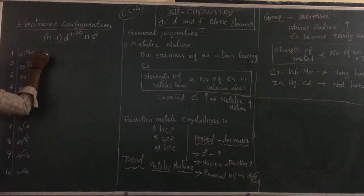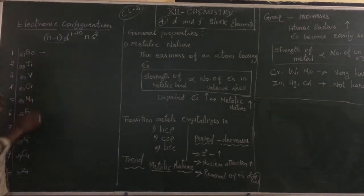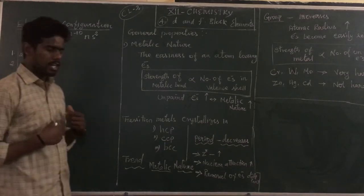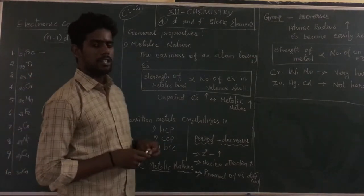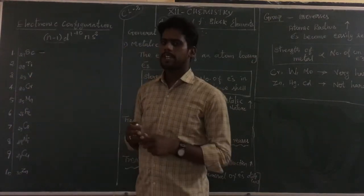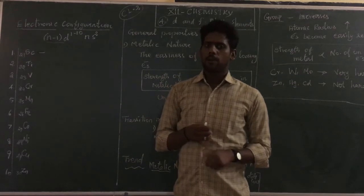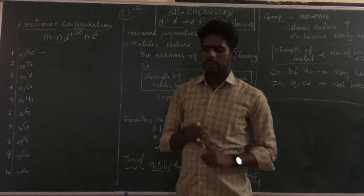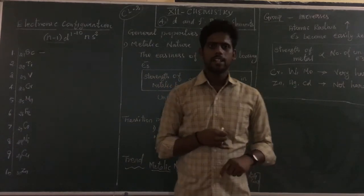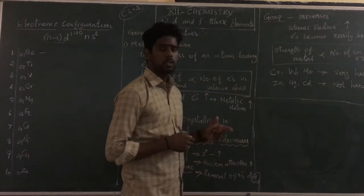If you want to work out an electronic configuration, we will follow three rules: the Aufbau Principle, the Pauli Exclusion Principle, and Hund's Rule.